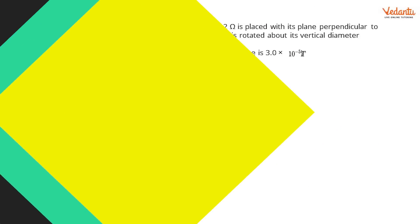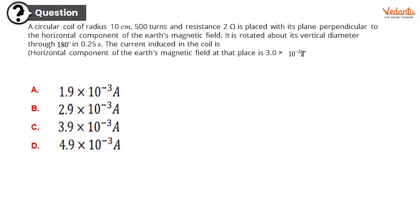Question number eight: a circular coil of radius 10 centimeter, 500 turns, and resistance 2 ohm is placed with its plane perpendicular to the horizontal component of the earth's magnetic field. So it's perpendicular to the horizontal component, interesting. It is rotated about its vertical diameter through 180 degrees in 0.25 seconds. The current induced in the coil is—if we assume horizontal component of the earth's magnetic field at that place is 3.0 × 10⁻⁵ tesla. Let us know what is the correct answer guys. This is a very interesting problem where you have to visualize the question. If you are good at that, this will come out to be really easy, and obviously you should know the formula.